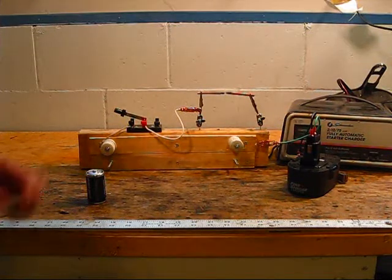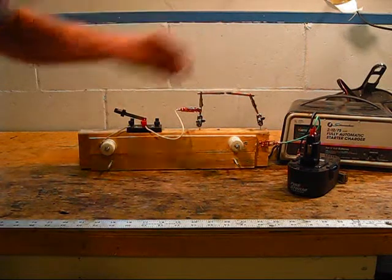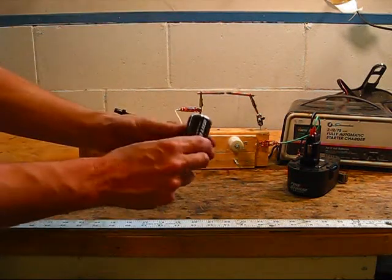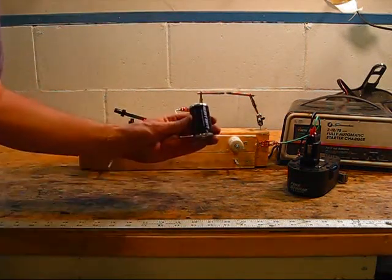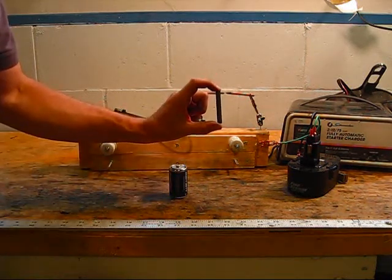Let me show you the components of the arc light. These are carbon rods. I got the carbon rods by taking apart a non-alkaline battery. Inside the non-alkaline battery, if you take it all apart, is a piece of pure carbon rod.